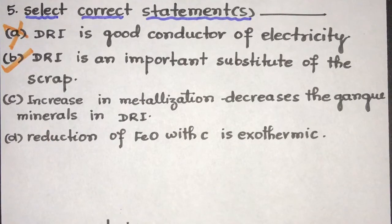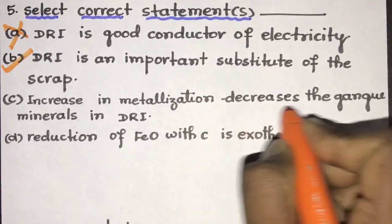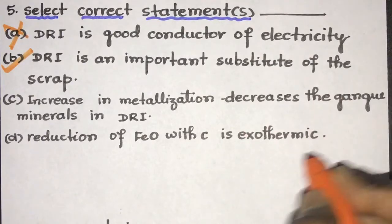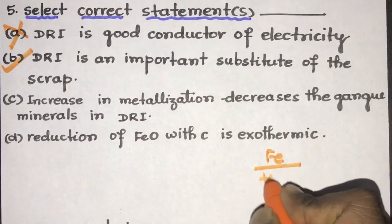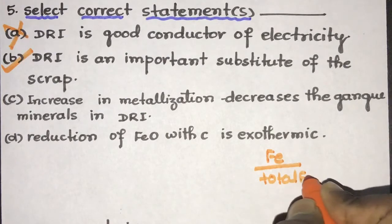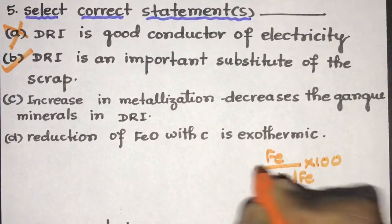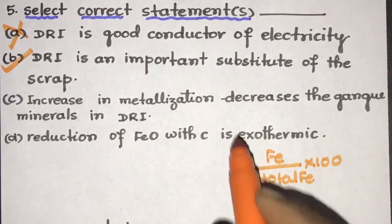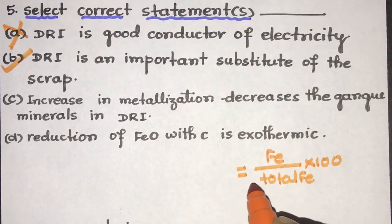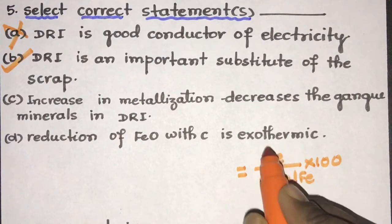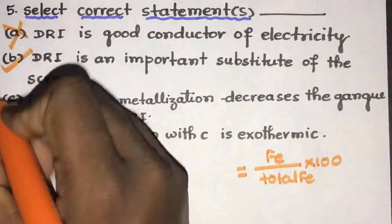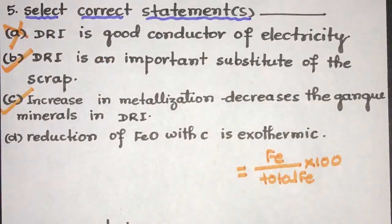Coming to the next. Increase in metallization decreases the gang minerals in DRI. So metallization is the amount of free iron in DRI, that is the free iron in DRI divided by the total iron times 100. So if the metallization is high, there will be more amount of free iron, so gang minerals will be low in DRI. And this is absolutely correct.